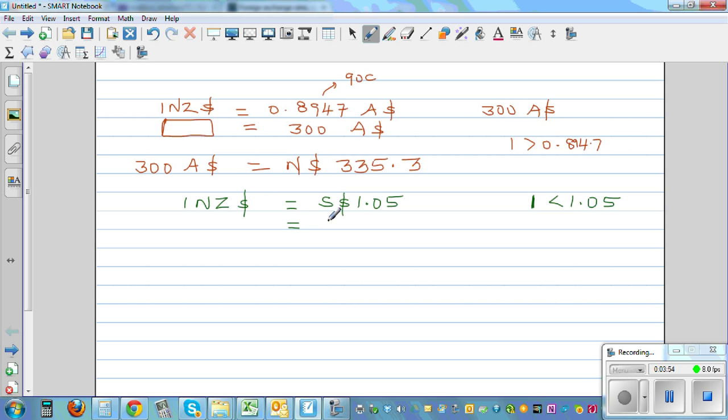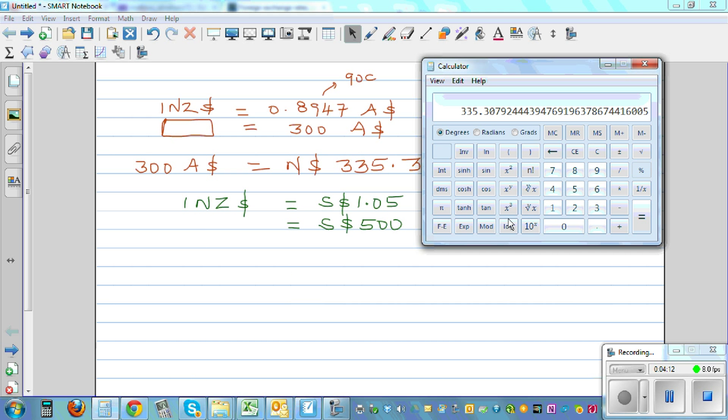If suppose you have got 500 Singapore dollars, how much would this be? Well, this number has to be less than 500. So let's do 500 times 1.05. This is 525. The answer doesn't make sense because this number has to be less.